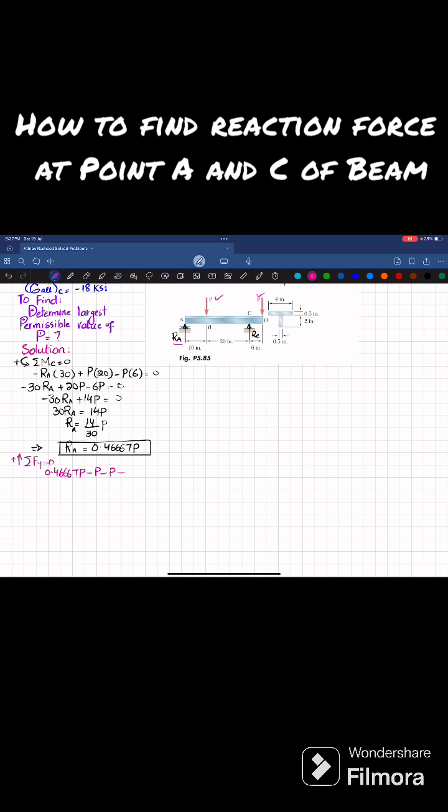So minus P minus P plus this Rc which is upward is equal to 0. When you calculate, you will get Rc equal to 1.533 times P. This is also positive, so our assumed directions are correct.